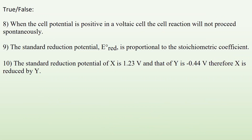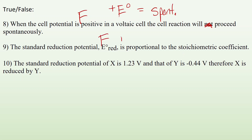Number 8 — true or false: when the cell potential is positive in a voltaic cell, the reaction will not proceed spontaneously. This is a false statement — it could be made true by crossing out the word 'not.' Positive E⁰ equals spontaneous. Number 9: the standard reduction potential E⁰ red is proportional to the stoichiometric coefficient. That's false as well — it is not proportional. So you can ignore the coefficients when you're calculating the E⁰ values.